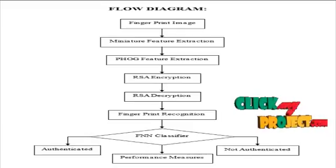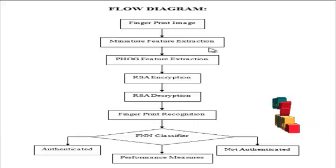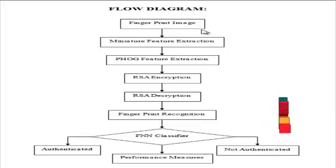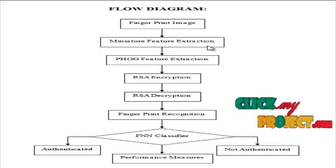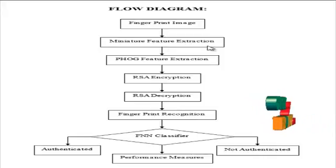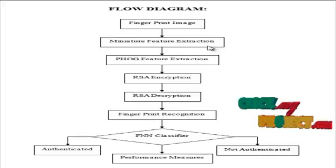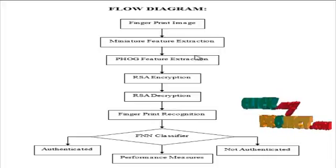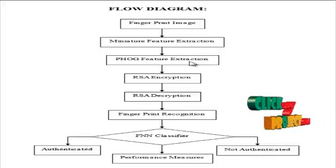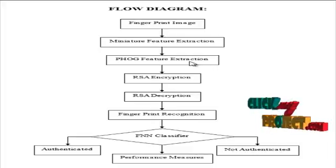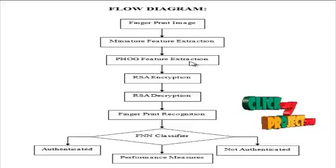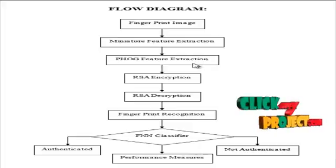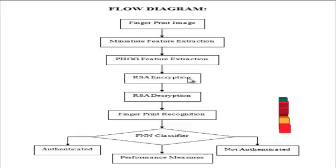Let us see the flow of the process. First, the input fingerprint image is obtained from the dataset. From the obtained fingerprint, minutiae features are extracted — that is, the ridges and bifurcations are extracted. These are the point-based features extracted from the input image. After that, Pyramid Histogram of Gradients (PHOG) features are extracted. PHOG features are texture-based features extracted from the input images. We combine these two features and encrypt them using the RSA encryption algorithm.